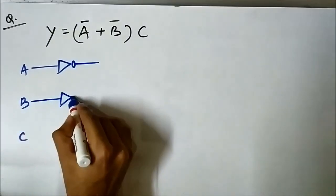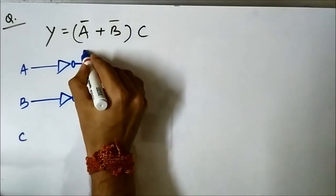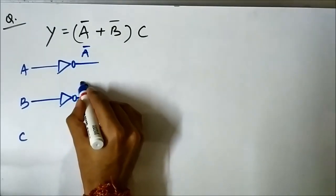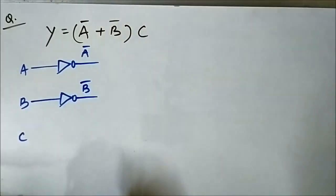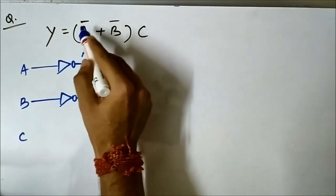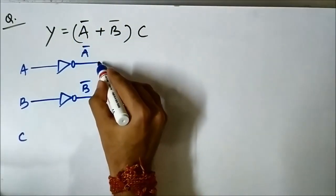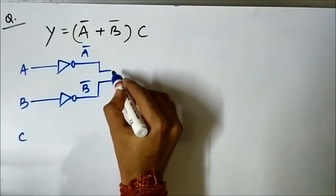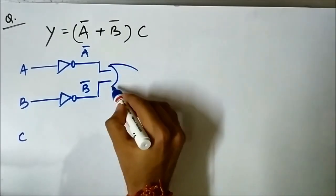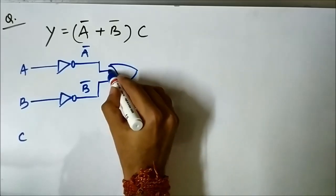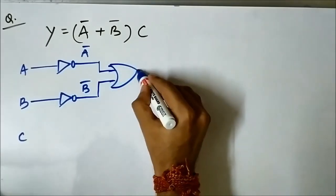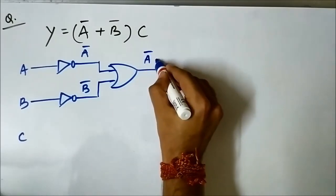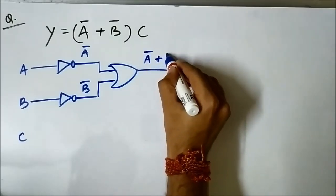Same for B — so we get Ā and B̄. Now we have to get Ā + B̄, so we pass both of these signals through an OR gate, which gives us Ā + B̄.